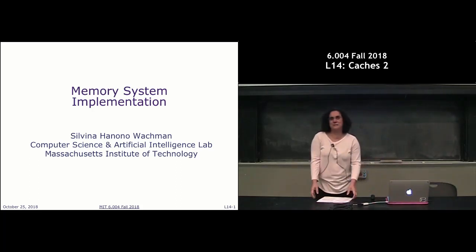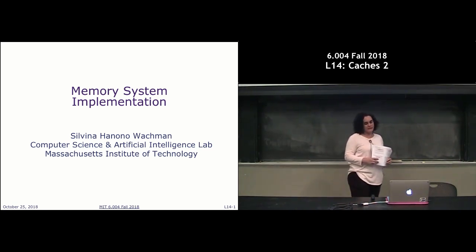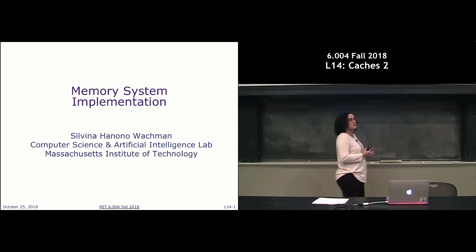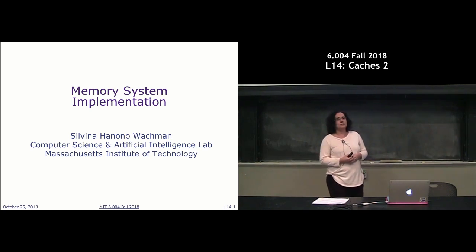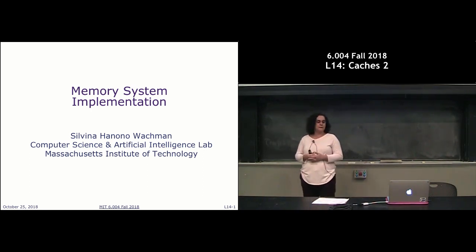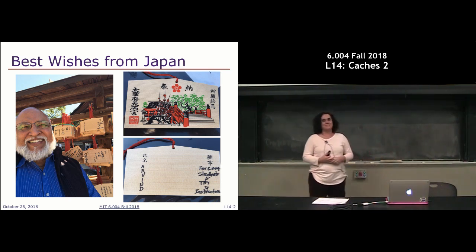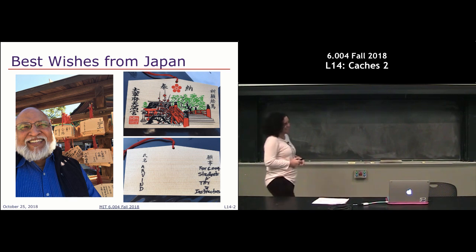Good afternoon, everyone. Today we're going to continue our discussion of caches. Last time we talked about why we want to introduce caches, which is basically to make it seem to the processor like we have a large and fast memory rather than a large and slow memory. Today we're going to look into how we implement this memory system consisting of both an SRAM cache and a DRAM main memory. But before we get started, Arvin sent us a picture from Japan with a note specifically to you guys, hanging up in a shrine.